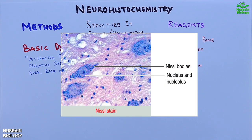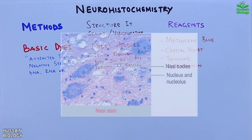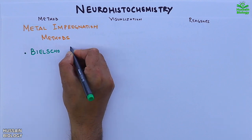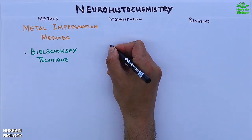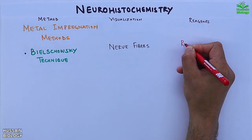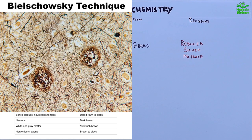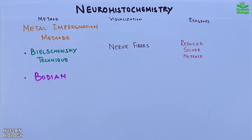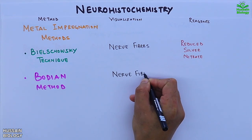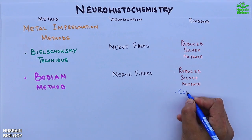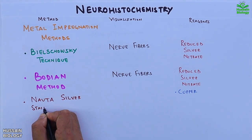When stained with basic dyes like methylene blue, then we have the metal impregnation method, where metals are used to stain the structures. The first technique is the Bielschowsky technique, which is used to visualize nerve fibers by using reduced silver nitrate as a reagent, as shown in the diagram. The second is the Bodian method, which is also used to visualize nerve fibers by using reduced silver nitrate and copper as reagents.